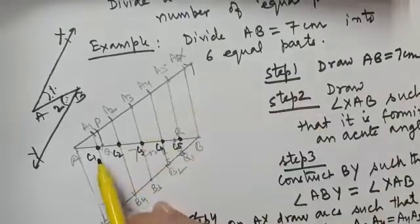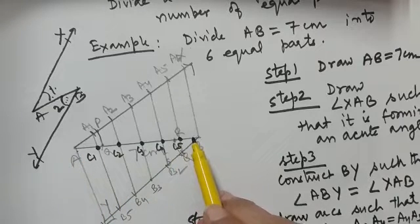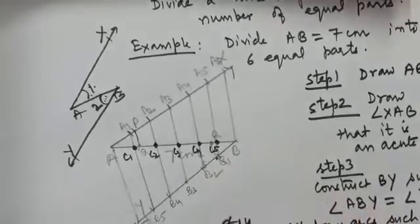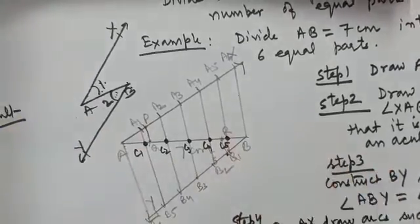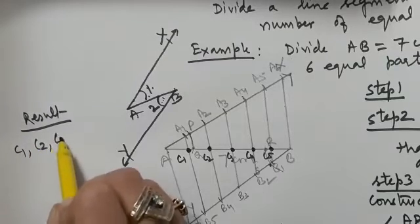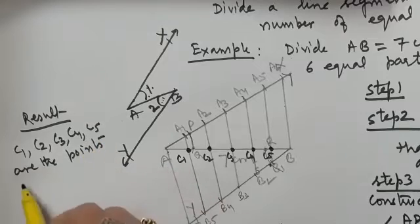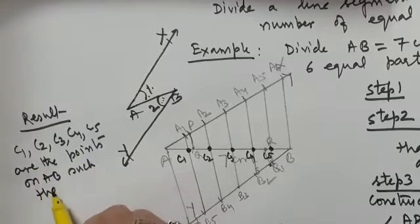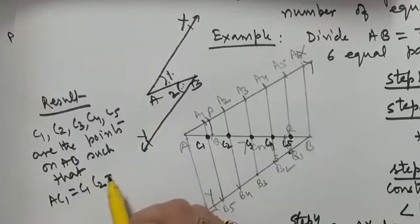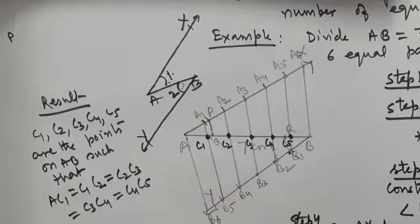And these, when we join, you see the point of intersection of these lines with AB. Mark these points of intersection as C1, C2, C3, C4, C5. Right? And what is the result? Write down the result. Result is very important. What is the result? The result is C1, C2, C3, C4, C5 are the points on AB such that now you see what are the 6 equal parts of AB. AC1 is equal to C1C2 is equal to C2C3 which is equal to C3C4 which is equal to C4C5.